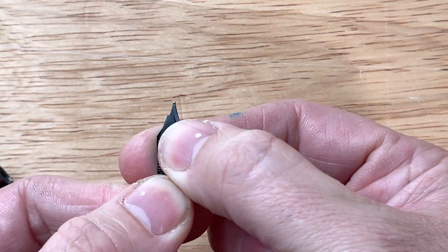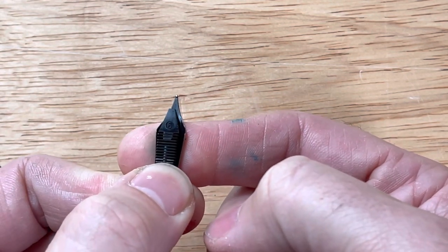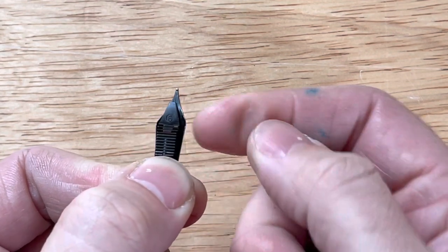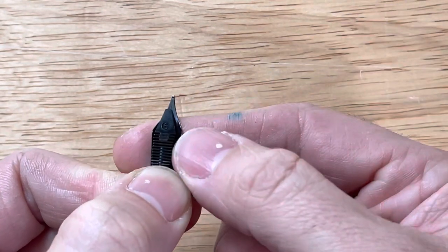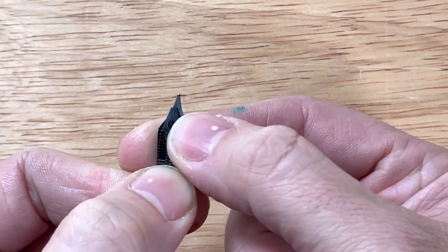Now if it's off to the side a little bit, like so, this is a rather extreme example, and it could be installed like this on certain pens, it's not going to line up exactly with that slit, the feed channel on the feed.